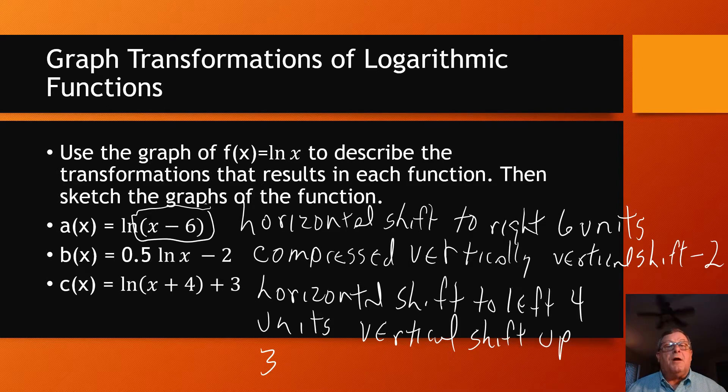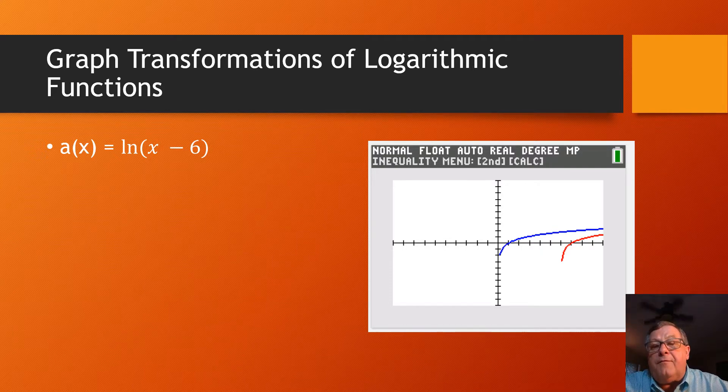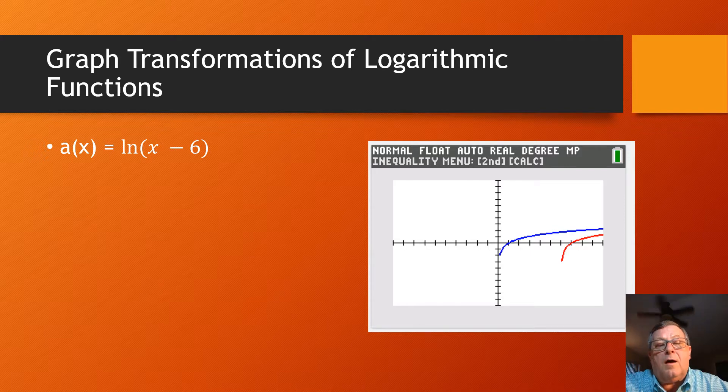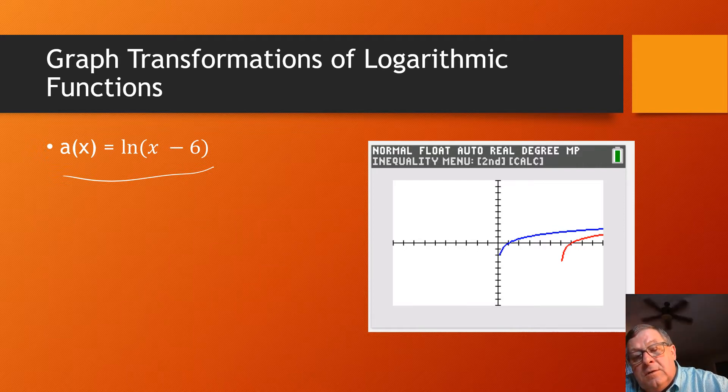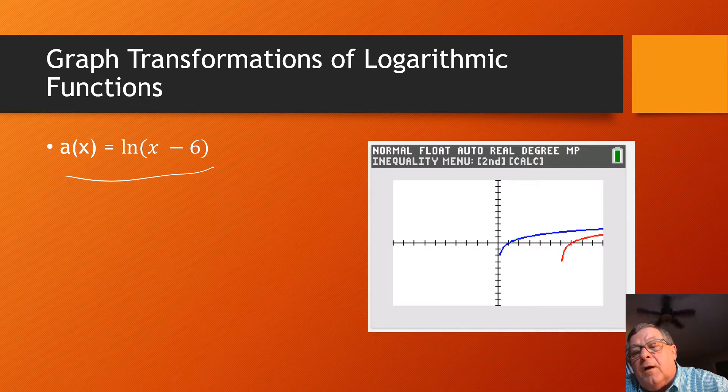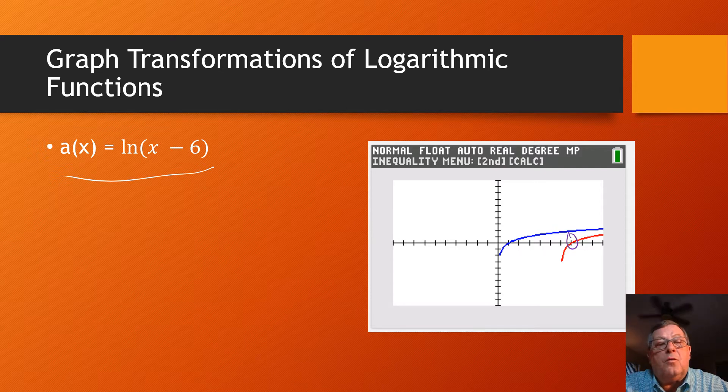Okay. Well, there's the description of it. Let's go take a look at the graphs themselves. All right. So here in the blue, the graph in the blue is just simply the natural log of x, the parent function of this log function. And here we see the x minus 6. And in fact, I do see a horizontal shift of 6 units. That's 1, 2, 3, 4, 5, 6. So there's that horizontal shift to the right of 6 units.